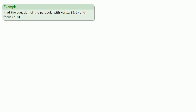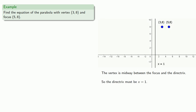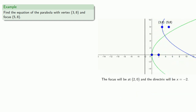Suppose we know where the vertex and the focus are — graph and label. The vertex is midway between the focus and the directrix. Given the way the points are located, the directrix must be vertical with equation x equals 1, and the parabola is horizontal. We move the vertex to the origin by translating left 3 and down 8. This moves the focus to (2, 0) and the directrix to x equals negative 2, so p is equal to 2.